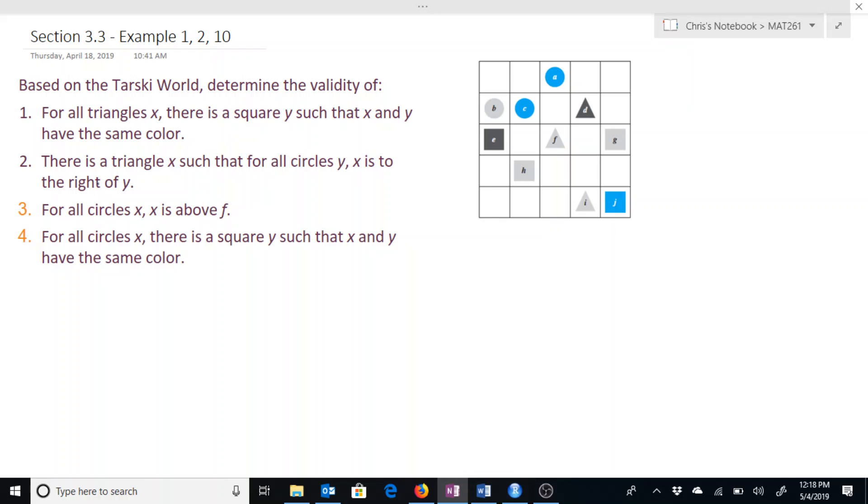So the first one: for all triangles x, there is a square y such that x and y have the same color. So if we look at this picture, we have a gray triangle here, and there is a square g right here that is the same color.